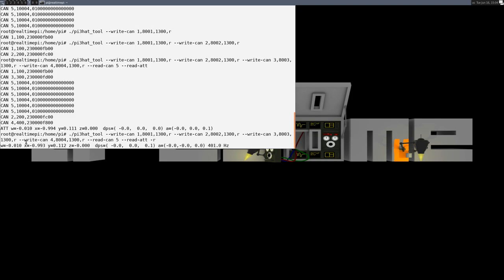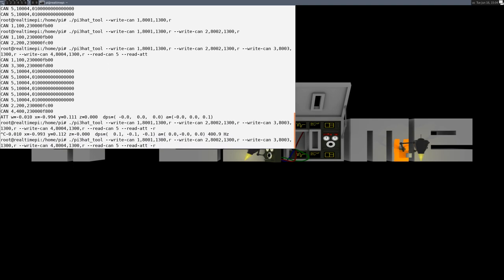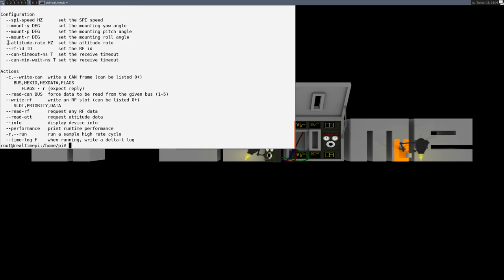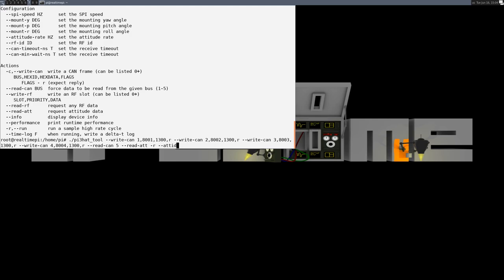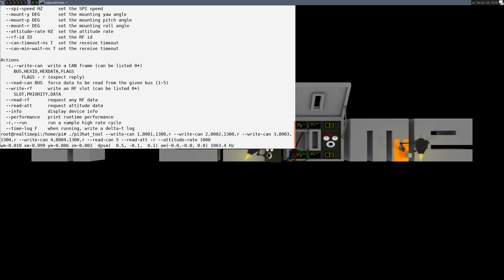By default the rate is 400 hertz, but we can use the dash dash attitude rate option to configure it from a number of options, with 1,000 being the highest. So we'll specify 1,000, run it, and see that yes, it can read the attitude and send all the canned frames at 1,000 hertz.